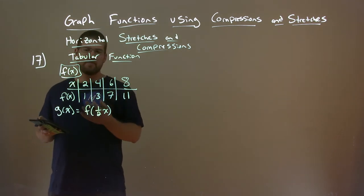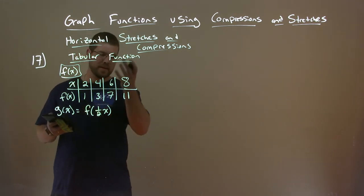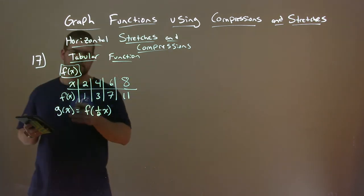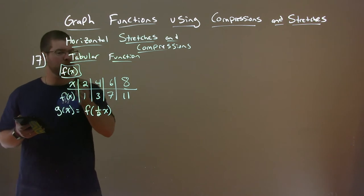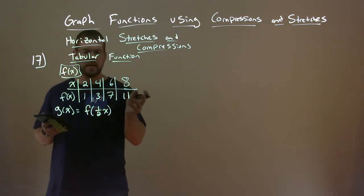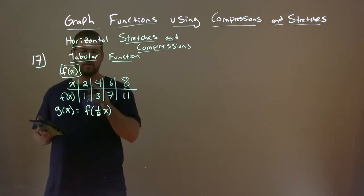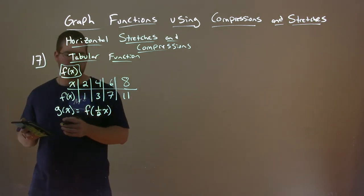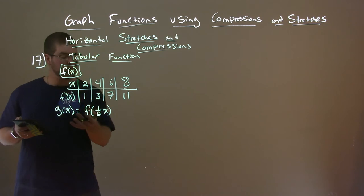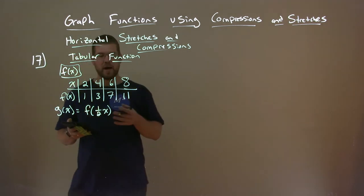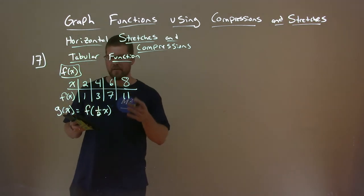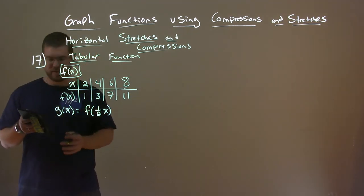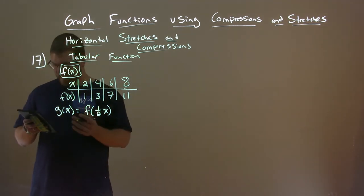We're given f of x as a tabular function. The inputs are 2, 4, 6, 8, and the outputs are 1, 3, 7, 11 for f of x. We're given g of x is equal to f of one half times x, and we want to write g of x as a table.